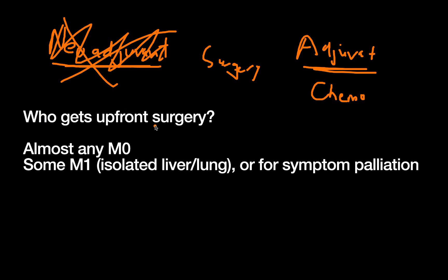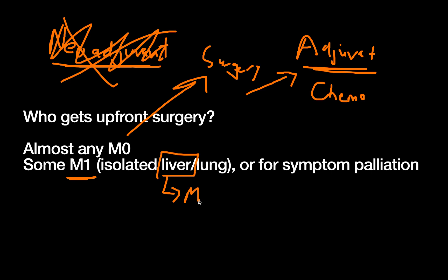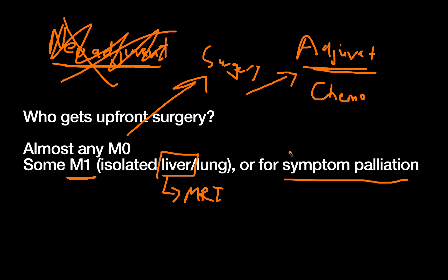Essentially anybody with resectable disease — meaning M0 — gets surgery first. If they're above the T3 or N1 cutoff, they'll get adjuvant chemo afterwards. However, some M1 disease, particularly patients with isolated liver lesions or isolated lung lesions, can get a concurrent liver-and-colon or lung-and-colon resection. If getting a liver resection, patients need an MRI preoperatively. You may also operate on M1 patients with symptoms that can only be palliated by surgery, primarily obstruction.